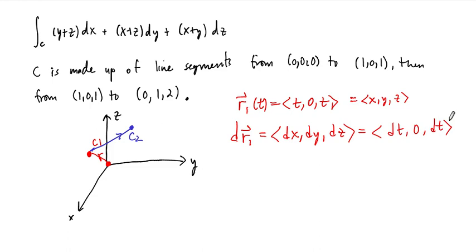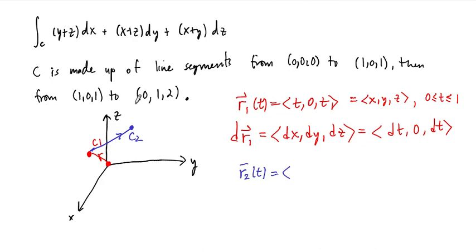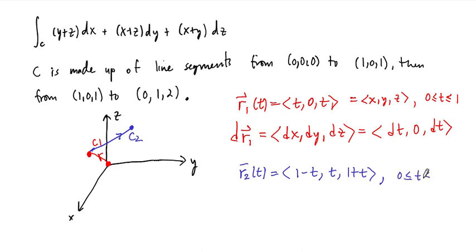This gives us our x, y, z and our dx, dy, dz in terms of the first portion of the curve. For C2, R2(t) starts at (1, 0, 1) and ends at (0, 1, 2). So R2(t) = (1 − t, t, 1 + t), with t varying from 0 to 1. By the way, whenever we parametrize a line segment this way, the domain of the parameter is from 0 to 1.